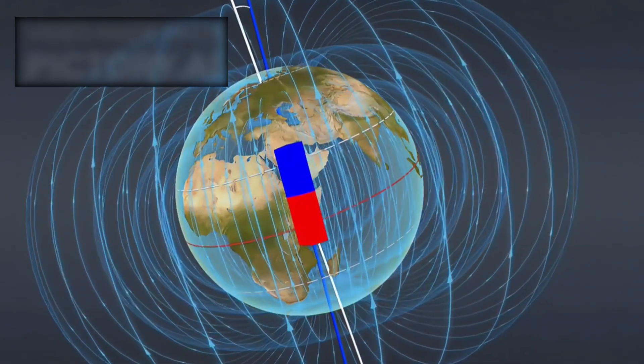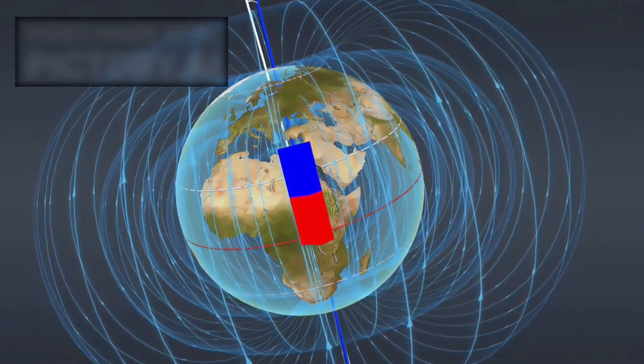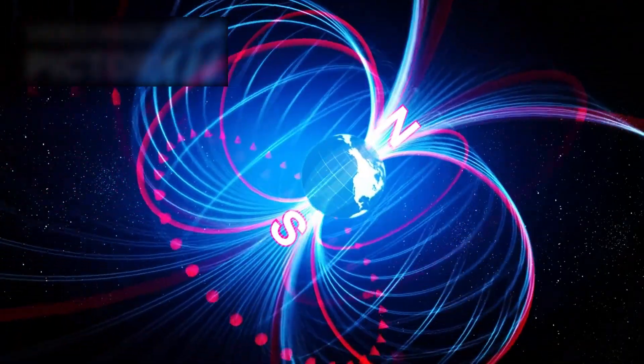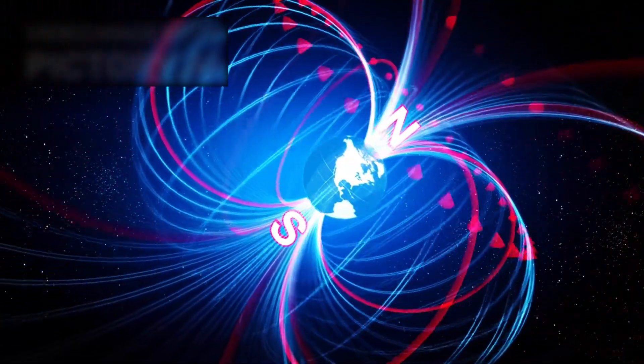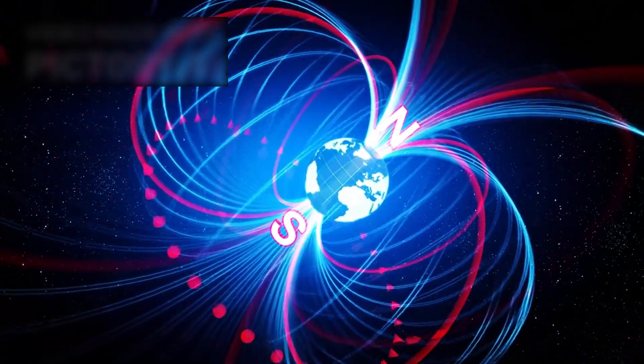If so, this invisible shield could play a vital role in protecting Earth and its neighboring planets from dangerous radiation. Our world, it seems, may not only be sheltered by the sun's magnetic field but also by a far greater galactic structure we are only beginning to understand.